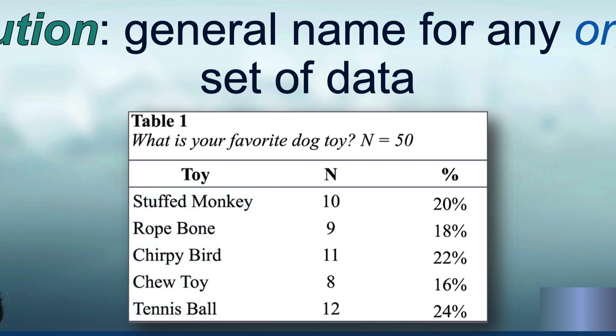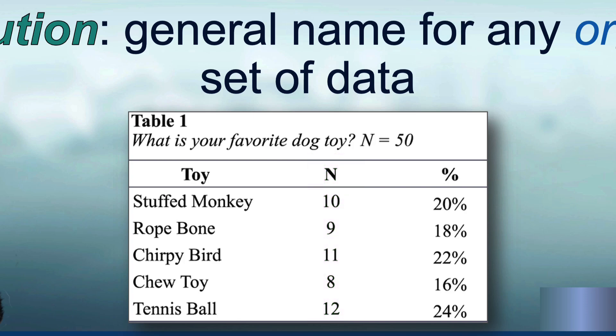The second column labeled N tells us how many dogs indicated that this was their favorite toy — a total number out of 50. Anytime we have an individual value and a total value, we can use division to create a percentage. So in our third column with the percent sign, we see the relative frequency, or percentage frequency, of how many dogs chose each particular toy as their favorite.